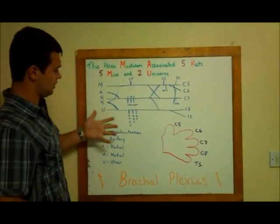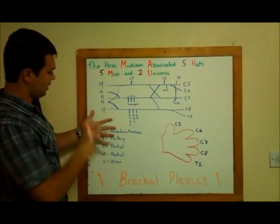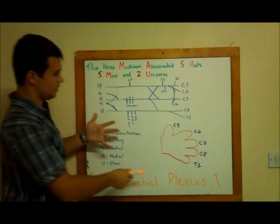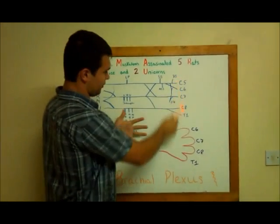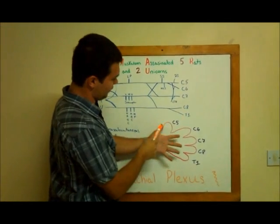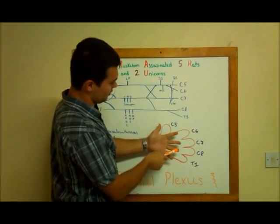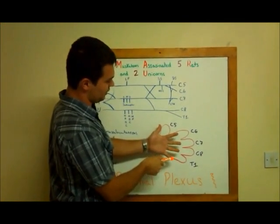So what you do, you take your hand — each one of your fingers represents a nerve. So you have C5, C6, C7, C8, and T1.